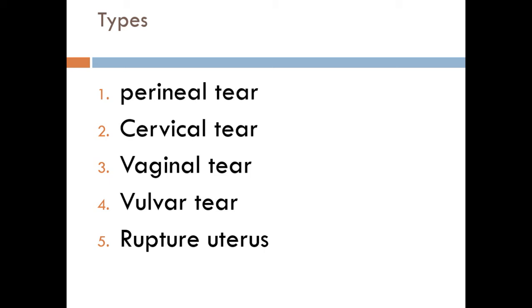Many types of trauma can occur in the genital tract during normal labor, which include perineal tear, cervical tear, vaginal tear, vulvar tear, and ruptured uterus.